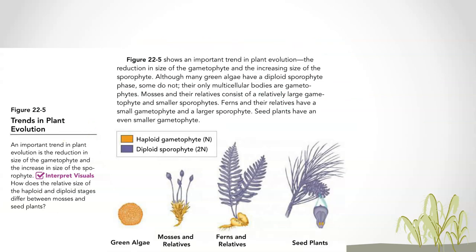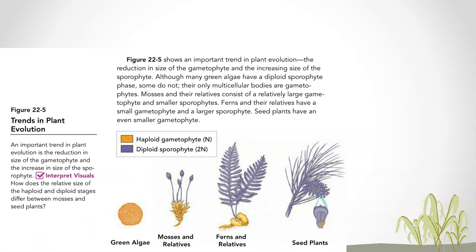The reduction in size of the gametophyte and the increase in size of the sporophyte is a trend in plant evolution. You can see that the orange haploid gametophyte is large in green algae, still large in mosses, relatively large in ferns. But in seed plants like a conifer, the gametophyte is small. That increased fitness because the larger sporophyte could survive and has better adaptations for living in the wild.